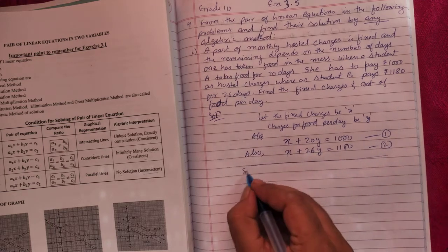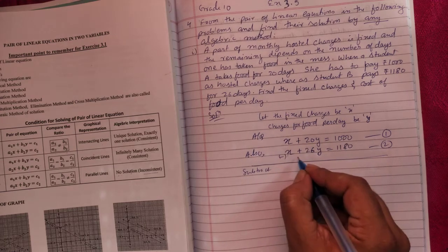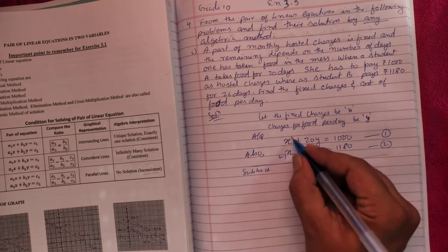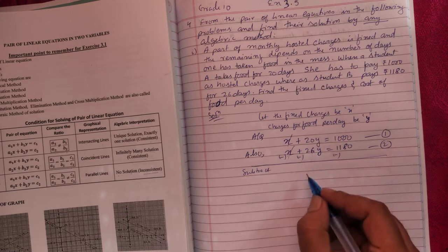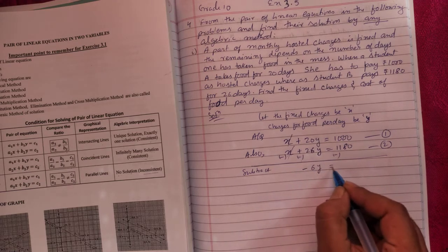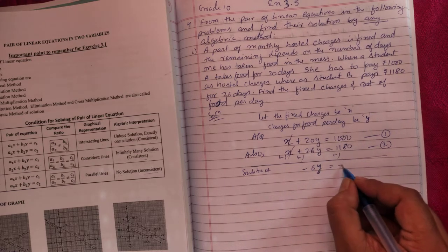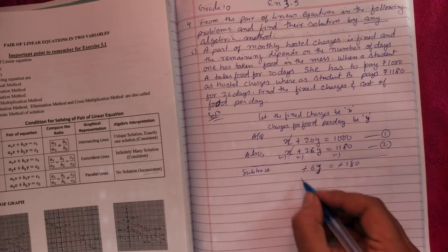We will subtract. You can minus this, sign changes. x minus x cancels, 20 minus 26 is minus 6y, and this will be minus 180.